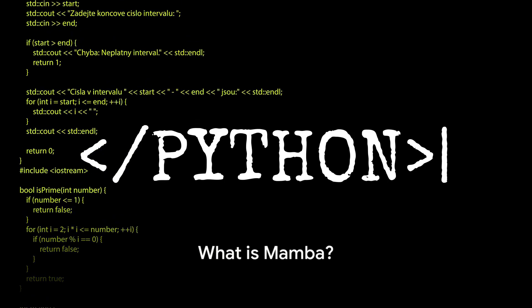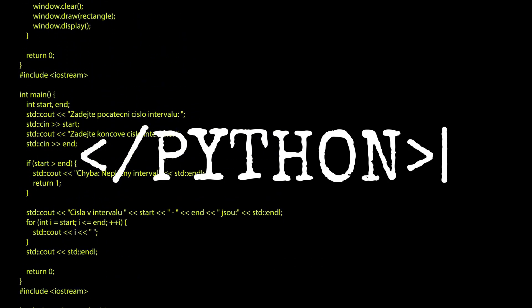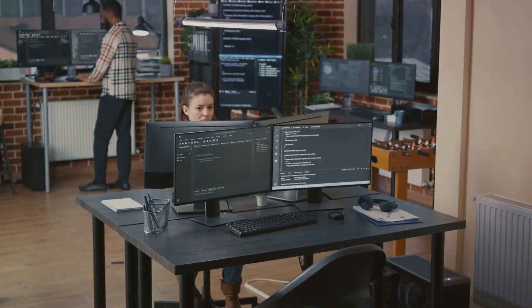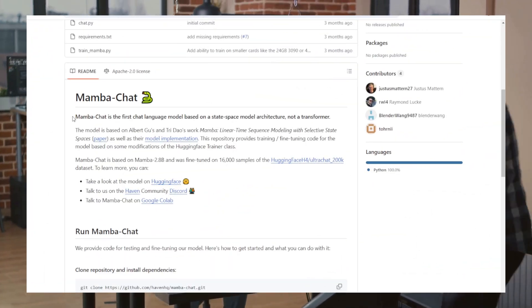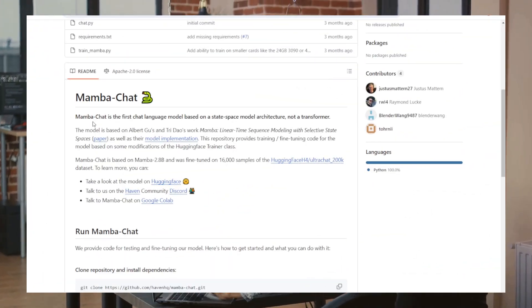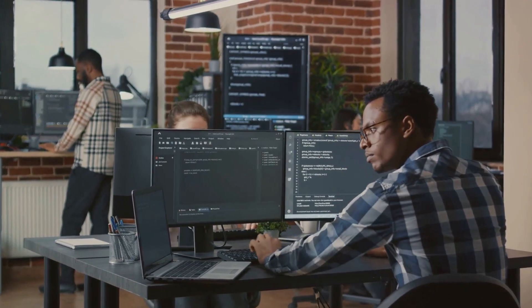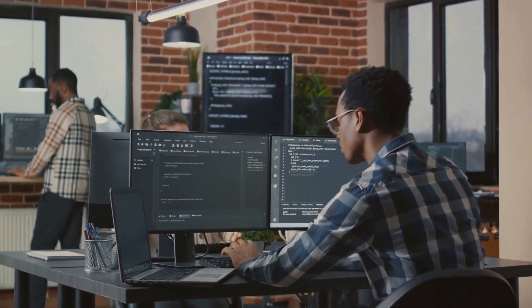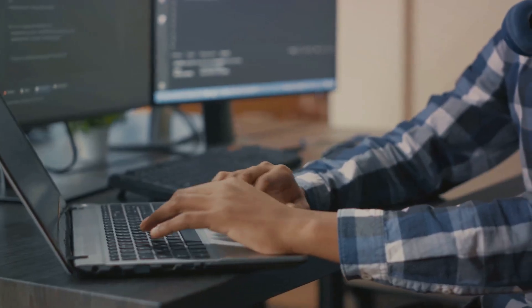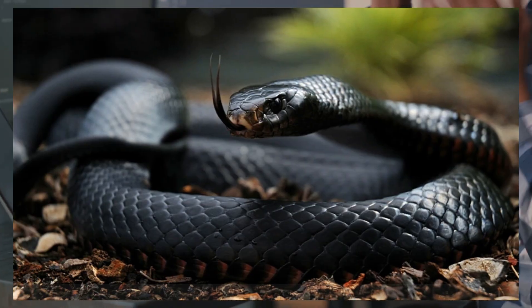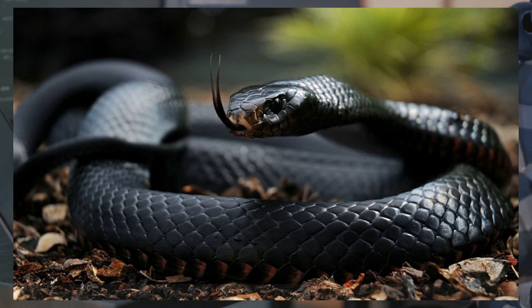First off, what exactly is Mamba? Mamba is an open-source cross-platform library that's designed to make high-performance computations in Python easier, faster, and more efficient. It's like a turbocharger for your Python code, providing a boost of speed that can make all the difference when tackling complex computational problems. Named after the fast and agile African snake, Mamba is all about speed.